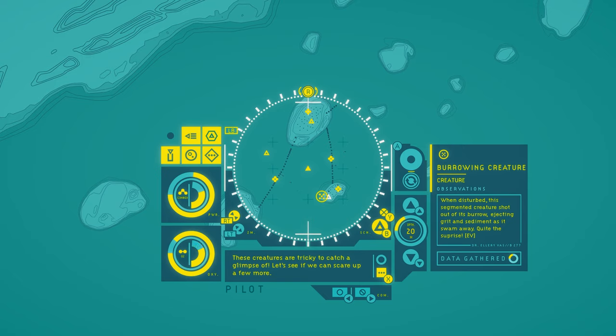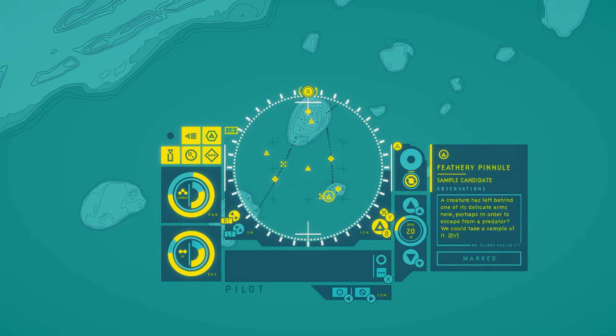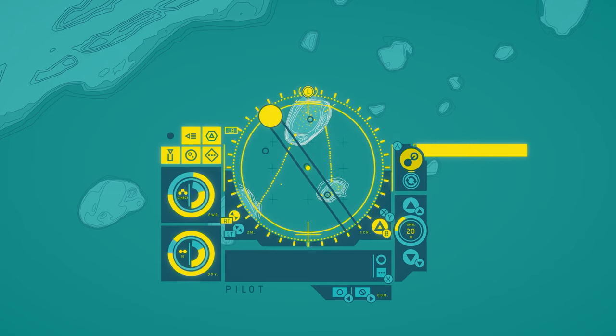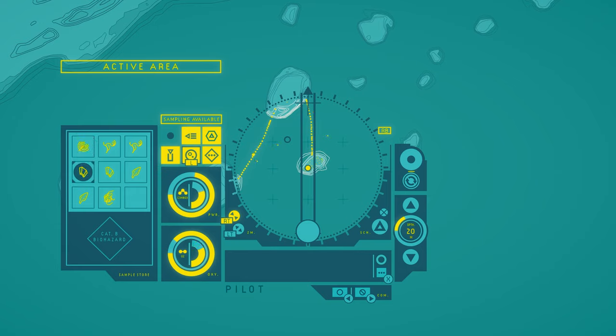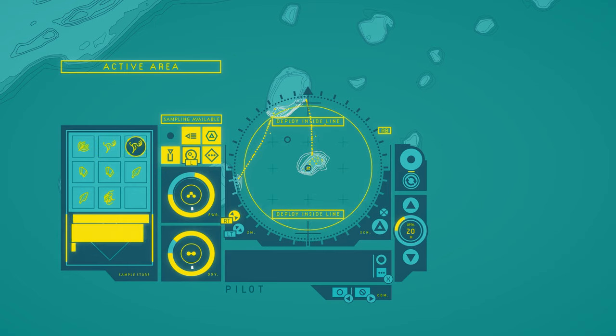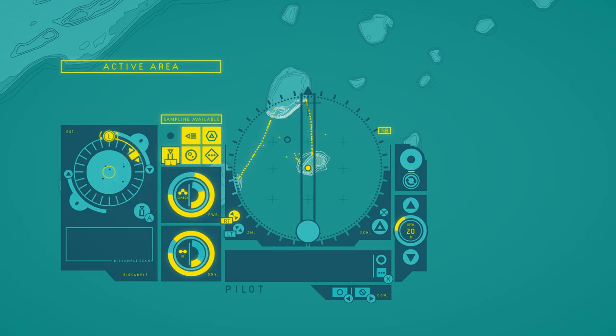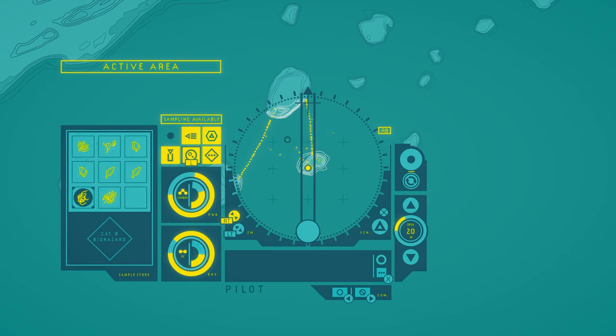These creatures are tricky to catch a glimpse of. Let's see if we can scare up a few more. Burrowing creature. When disturbed, this segmented creature shot out of its burrow, ejecting grit and sediment as it swam away. Quite the surprise. Feathery pineal. A creature is left behind one of its delicate arms here. Perhaps in order to escape from a predator, we could take a sample of it. Another new thing. Oh, I scared it. What do we dump? I mean, I guess we don't need two of anything, technically. These are worth a lot of power, so in terms of usefulness, the silken strands don't do much, so I'm comfortable getting rid of one.